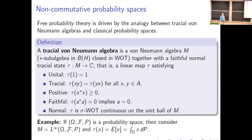Free probability theory came largely from the work of Voiculescu, but there are many ideas about non-commutative probability that have been around in the physics literature for a while, like studying bosonic and fermionic analogs of things. The goal is to use our knowledge of classical probability theory to motivate new results and see what happens in the non-commutative case — how things might be the same or different.